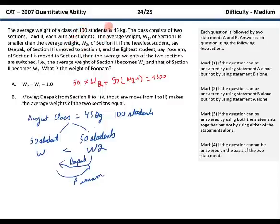In this question there is a class of 100 students where the average weight is 45 kgs. They are divided into two parts. One section has a weight of W1, the other has W2. W2 is greater than W1. Then one student Deepak, who is the heaviest in W2, is moved to W1. And Poonam, who is the lightest in W1, is moved to W2. And then for both sections the average weights change. As in the average weight for this section becomes W2 and the other one becomes W1. We are asked the weight of Poonam. The first sentence says that the difference between W2 and W1 was 1. Using this sentence you can calculate the exact values for W1 and W2, but you would not be able to calculate the weight of the person who moved because two people moved. If it had been only one person moving then you could have calculated. So we need something more.